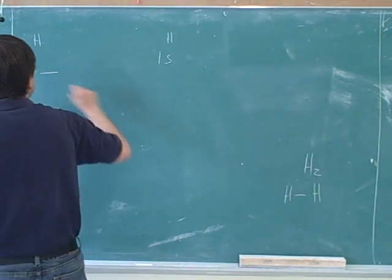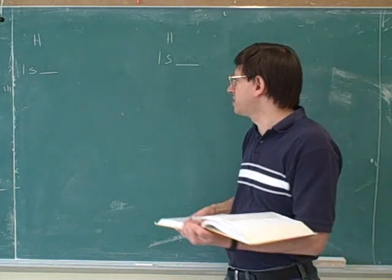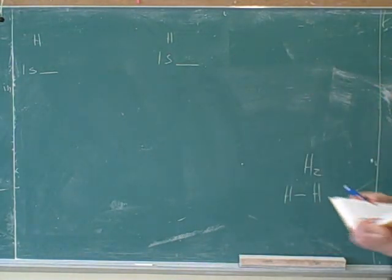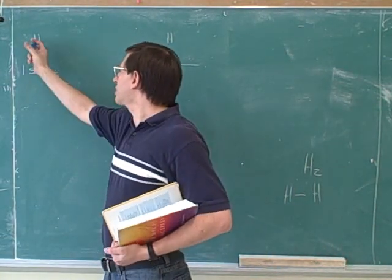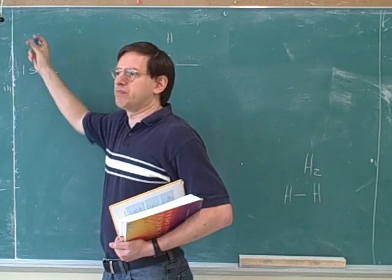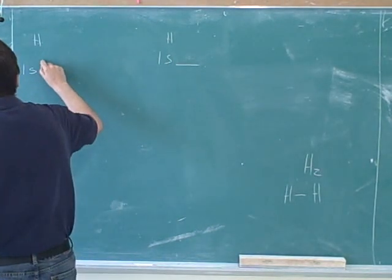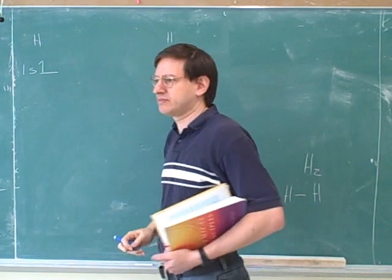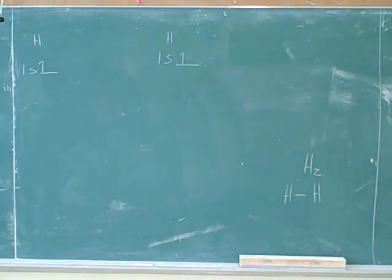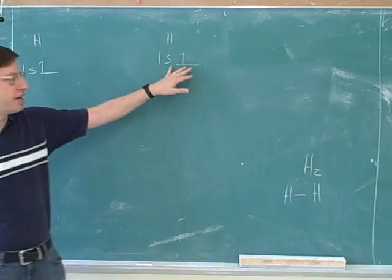Oftentimes we label an orbital just with a dash. So we could indicate these two orbitals with dashes. How many electrons is this hydrogen contributing to the molecule? One. It started with one, so it's contributing one electron. So we can indicate that like this. And we can say that this hydrogen is also contributing one electron. Now this is what I would call an atomic orbital. This hydrogen has a 1s atomic orbital in virtue of being an atom. And this has a 1s atomic orbital.